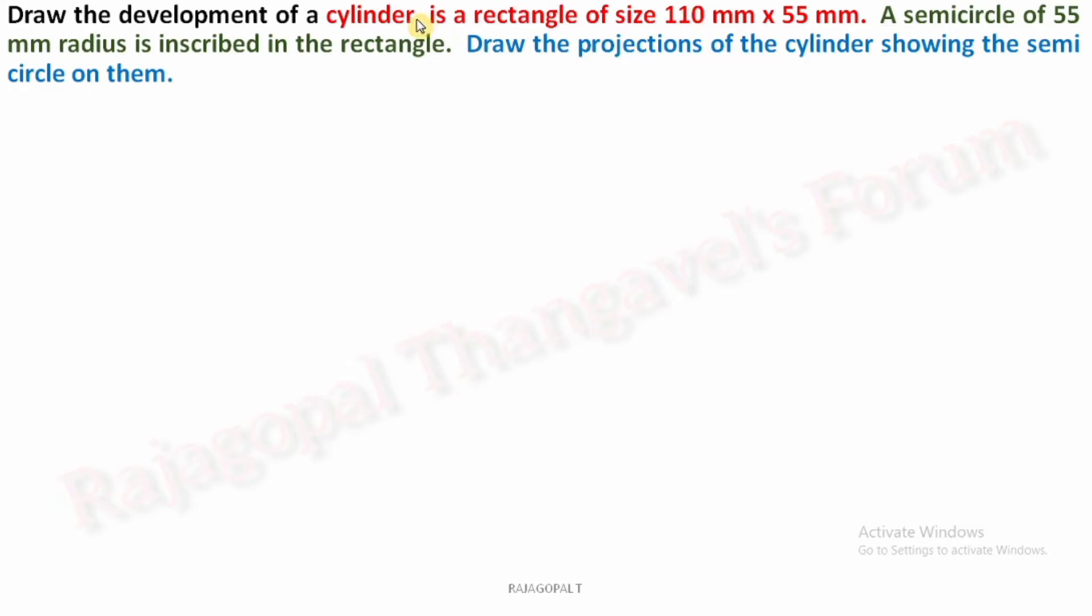So read the first sentence, rectangle of size 110 by 55. What is the meaning of this? This is the development surface. Development surface 110 is the stretch out length. 55 is the height of rectangle. So we can assume we can easily identify the 55 is the height of cylinder. Okay, that is the same height you are going to draw for development.